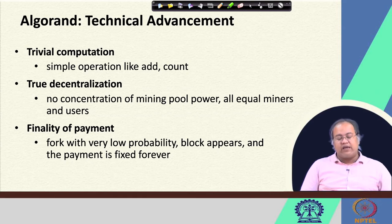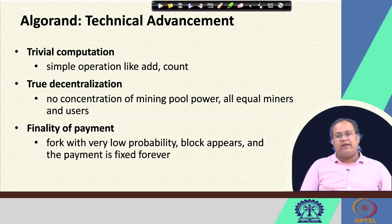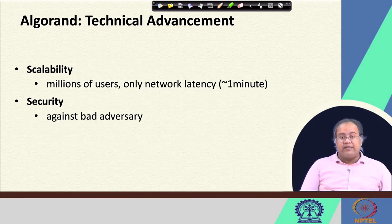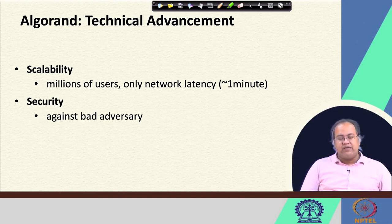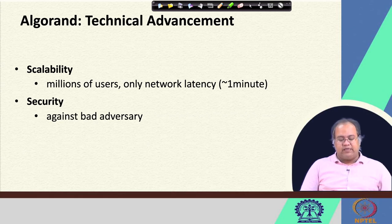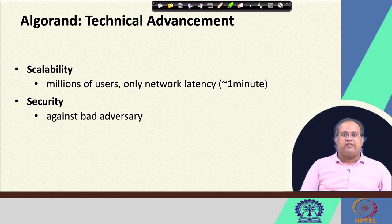Because a fork can happen with very low probability, whenever a block appears the payment is fixed forever. If you have a block, your payment is mostly confirmed. Algorand also supports scalability — it can support millions of users with around one minute to add every block — and it provides security, as it is safe against bad adversaries, because the fundamental principle it uses is the Byzantine agreement protocol.